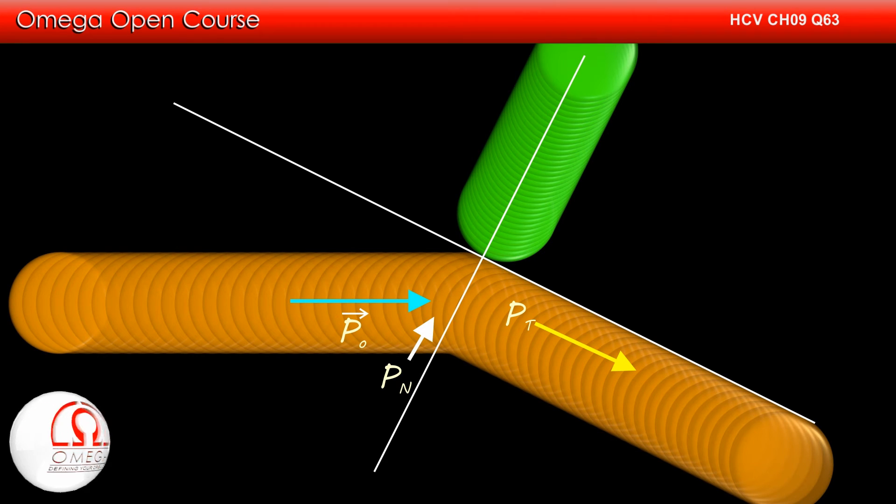So in normal direction, after the collision, the incoming body will stop while the body at rest will start moving in normal direction with the same momentum as the normal component of momentum of incoming body. Since the normal component of momentum of incoming body after the collision is zero, its final direction of motion is along tangential direction.